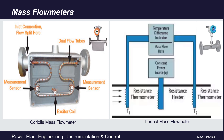Thermal mass flow meters employ the thermal dispersion principle, whereby the rate of heat absorbed by a fluid flowing in a pipe or duct is directly proportional to its mass flow. One temperature sensor is installed upstream of the heater and another downstream. The temperature difference — delta T — across the heater indicates the heat absorbed by the fluid, which in turn gives the mass flow indication.